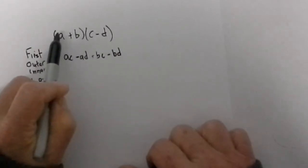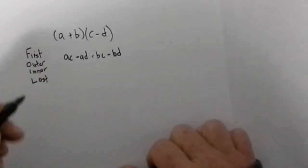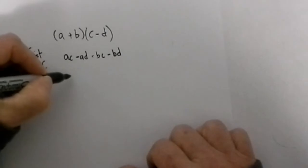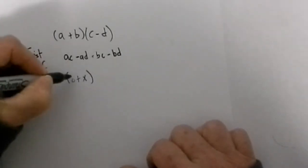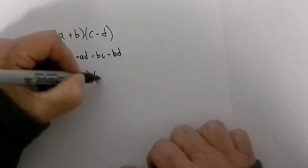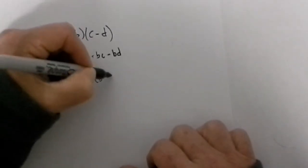First outer inner last. I will work the other example which is b plus x times b minus a.